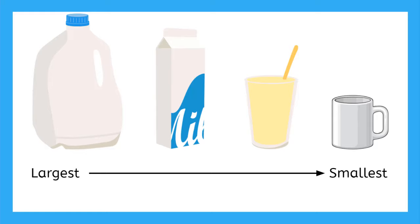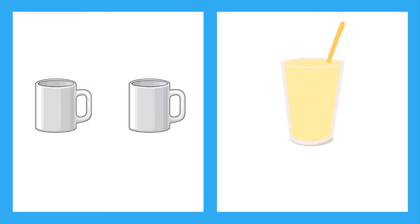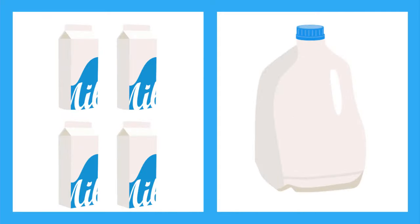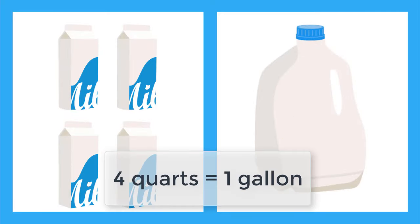Now let's review how these units compare to each other numerically, meaning with values. There are two cups in one pint. There are two pints in one quart. And there are four quarts in one gallon.